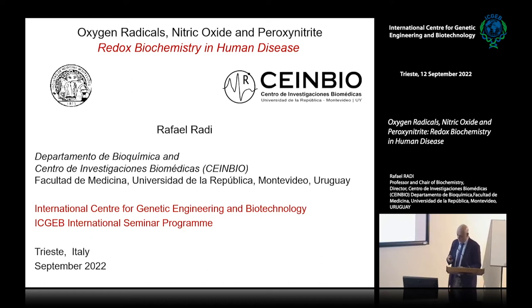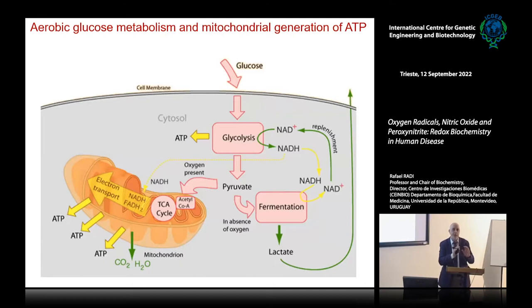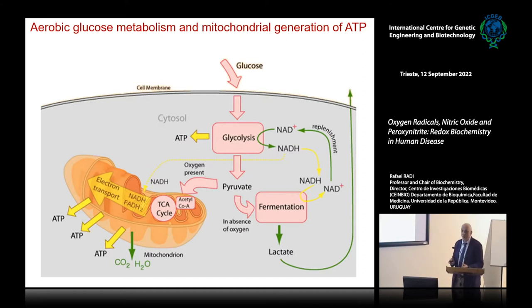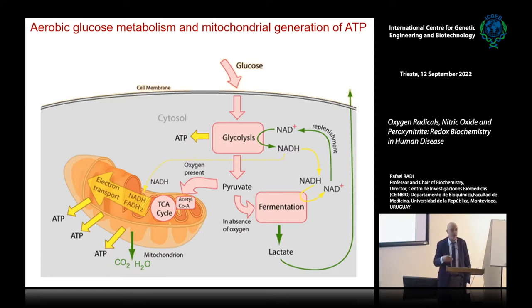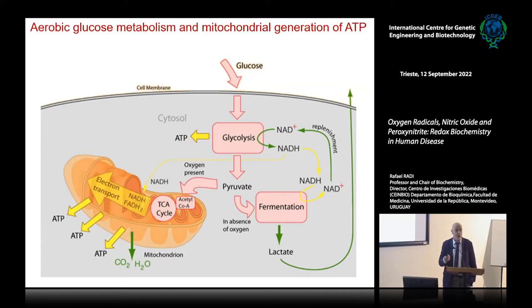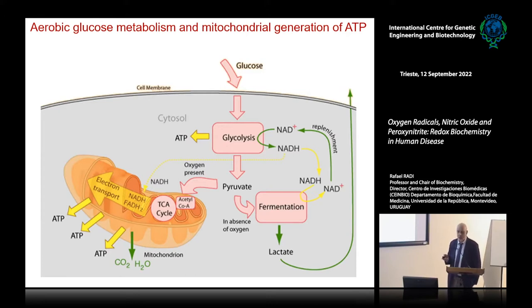Just to focus on one aspect of redox metabolism, I'd like to start talking about mitochondria. As we know, mitochondria is the major organelle for energy production through the oxidation of organic molecules that provide the electrons flowing through the electron transport chain to generate electrochemical gradients that end up forming ATP. In that process, molecular oxygen is the terminal electron acceptor, reduced by four electrons to water, and large amounts of CO2 are being formed.